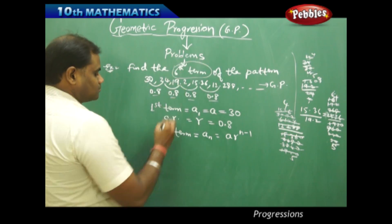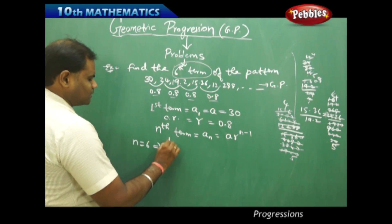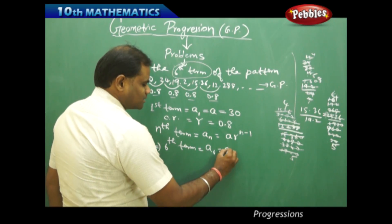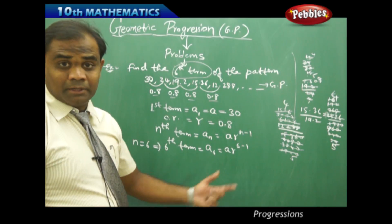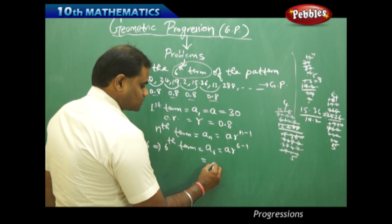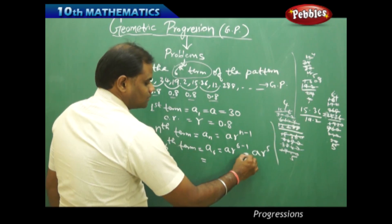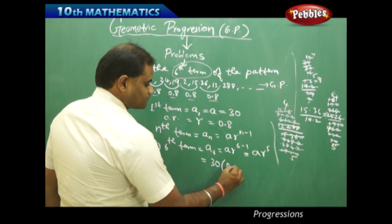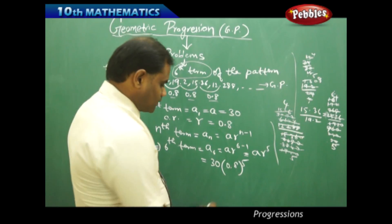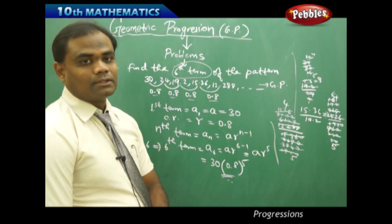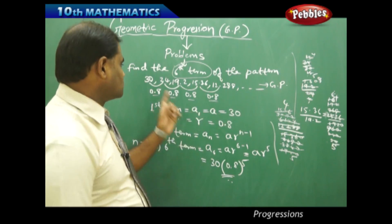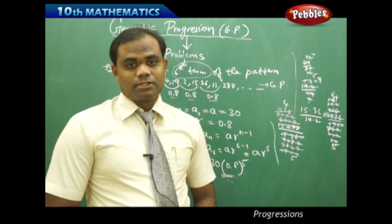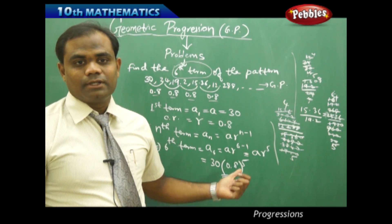Now since I need to find the 6th term, n equals 6. Substituting n equal to 6, I get the 6th term to be a · r^(6−1), which reduces to a · r^5. With a equals 30 and r equals 0.8, this simplifies to 30 times 0.8 to the power 5. This when multiplied gives me the value of the 6th term — the next term of the sequence after the 1st, 2nd, 3rd, 4th, and 5th terms. This can be calculated using a calculator.